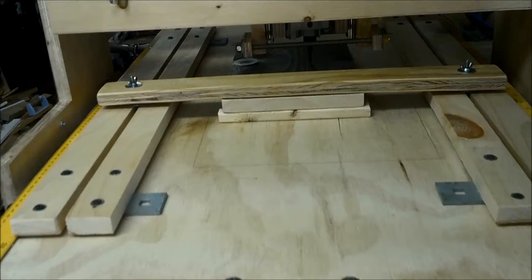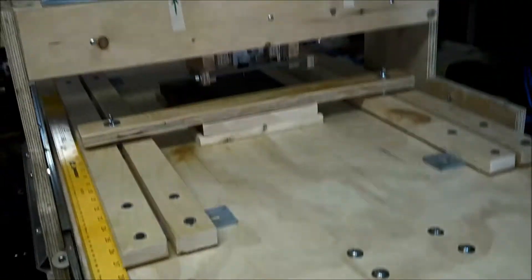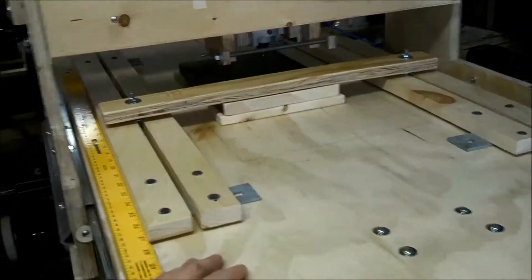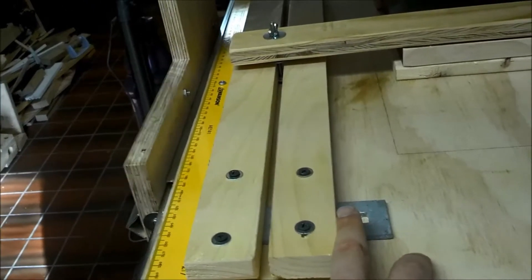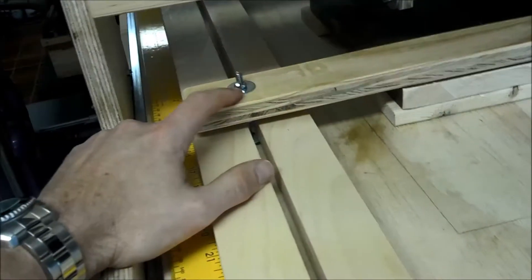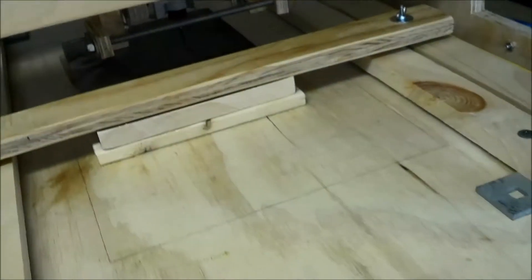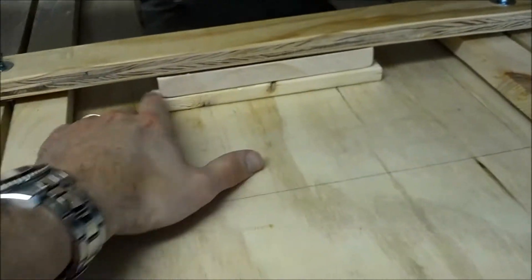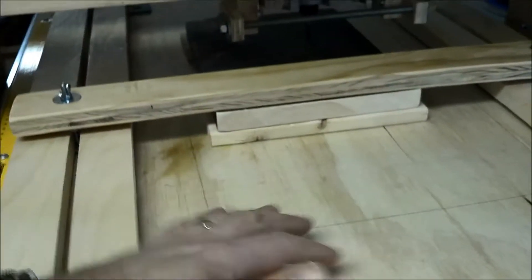For holding the work down, real simple solution, we'll see if this sticks around or if I do something different. Just two pieces of wood, I have these brackets laying around to raise this up. Just a bolt and wing nut on the top, goes across, tighten them down, use some little scrap pieces and that can hold your work piece down.